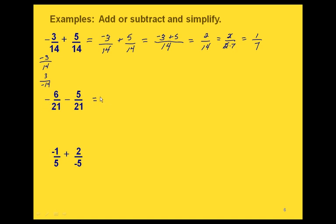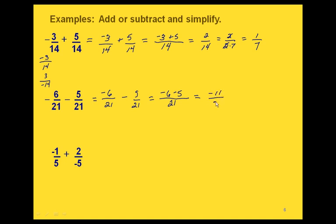Here again, we have a negative out in front of the fraction. Let's put it in the numerator with the 6, giving us negative 6 over 21 minus 5 twenty-firsts. These are like fractions, so we put 21 on the bottom for our denominator. Then on the top we have negative 6 minus 5. Taking negative 6 minus 5, we end up with negative 11. And 11 and 21 don't have any factors in common, so this is in simplest form. You can leave the negative in the numerator with the 11, but a more standard way is to put the negative out in front. You could write your answer either one of these two ways.